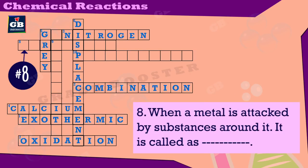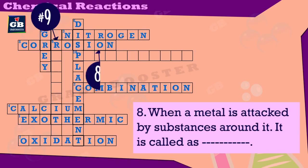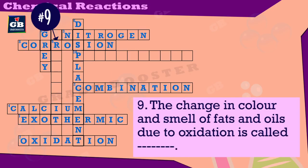When a metal is attacked by substances around it, it is called corrosion. The change in color and smell of fats and oils due to oxidation is also called corrosion.